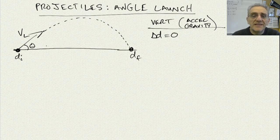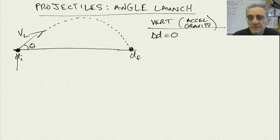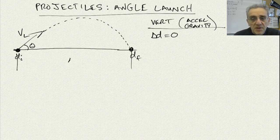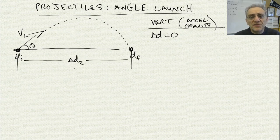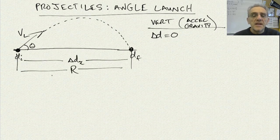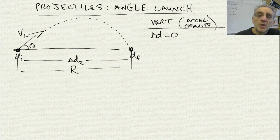The final position is at the same height as the initial position. What we want to figure out here is the delta DX — the distance. We're going to use a different variable for this: we'll call it R. The reason we'll call it R is it stands for the word range. So our purpose here is to figure out how far this projectile travels.